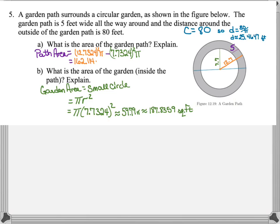If I subtract these two values, I will end up with 321.46 square feet. And that would be the area of the gray path around the garden.